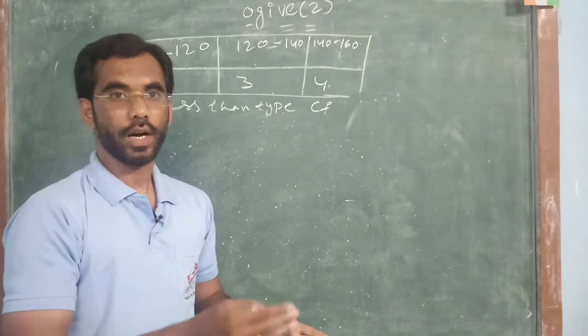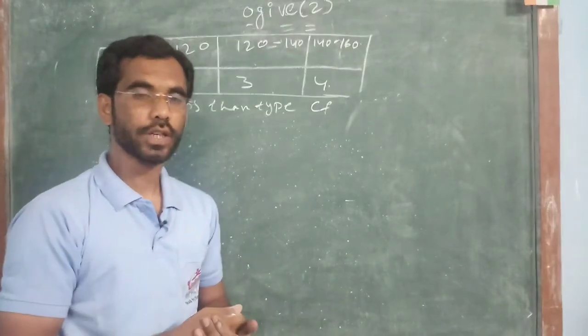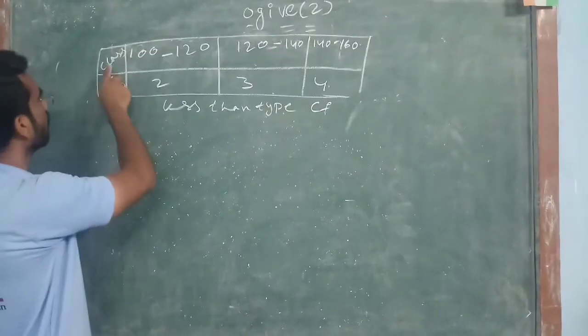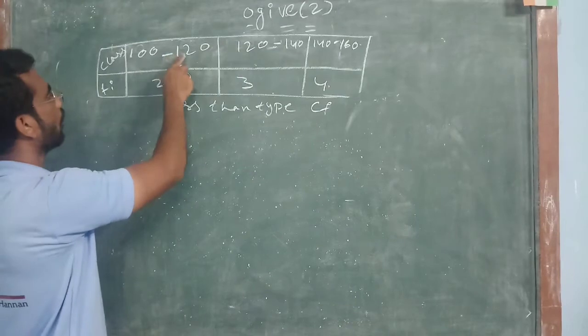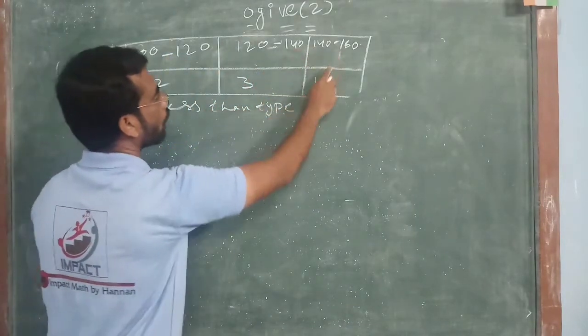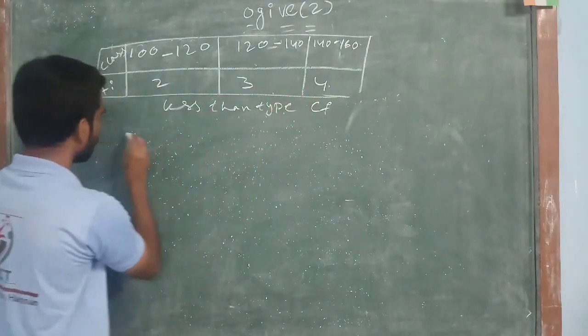In this we will see less than type cumulative frequency and more than type cumulative frequency. Now, in this one, here class I have taken 100-120, 120 to 140, 140 to 160 and the frequency 2, 3 and 4.